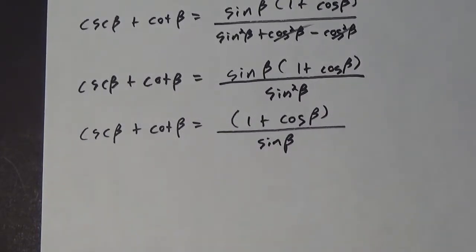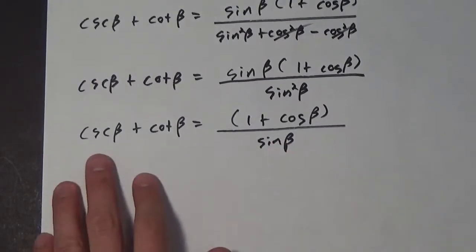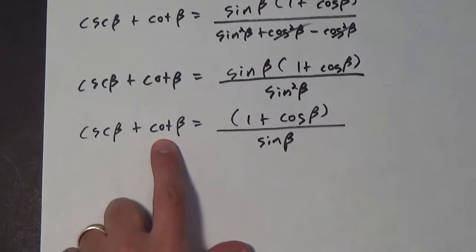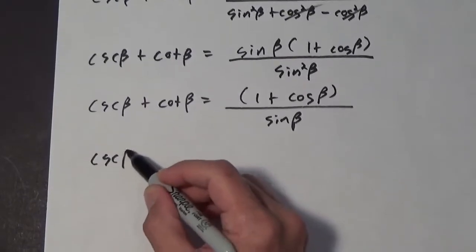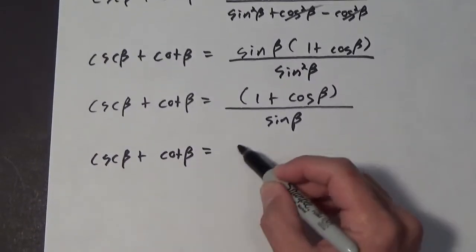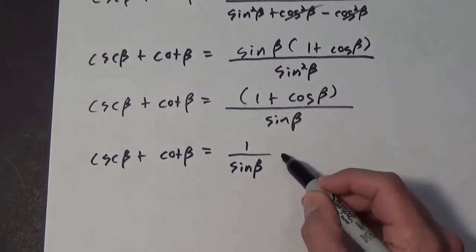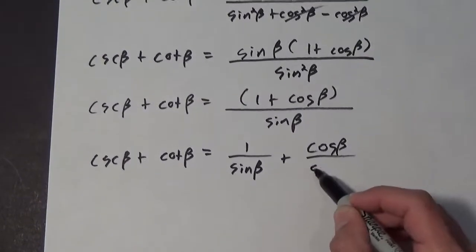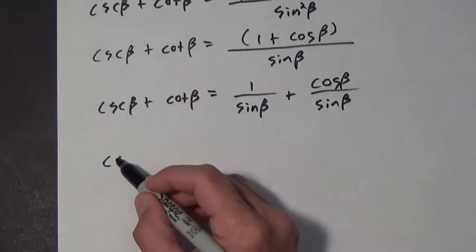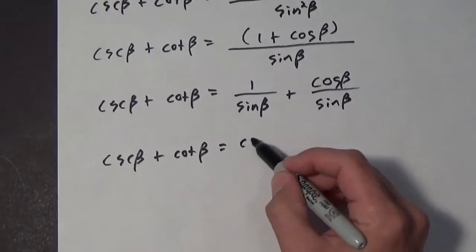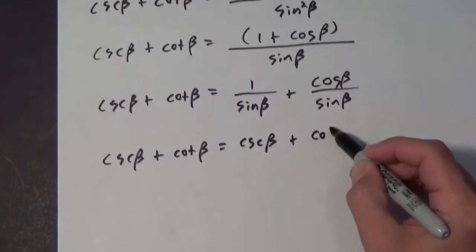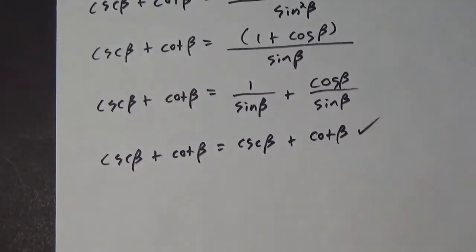We're almost there. We get the cosecant of beta plus the cotangent of beta equals 1 plus the cosine of beta all over the sine of beta. Now, cosecant is 1 over sine and cotangent is cosine over sine — that's essentially what we have. We just split this apart: 1 over sine of beta plus cosine of beta over sine of beta. So 1 over sine is the cosecant of beta, and cosine over sine is the cotangent of beta. There you go — we have simplified that expression.